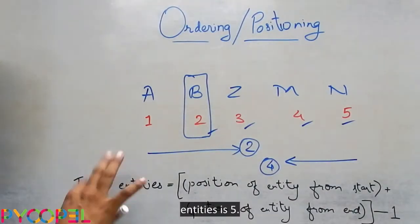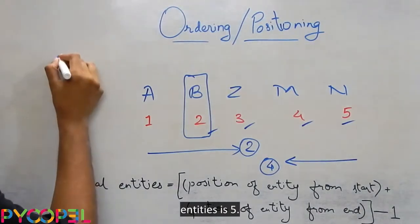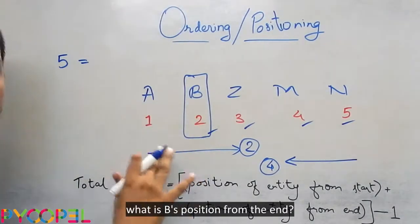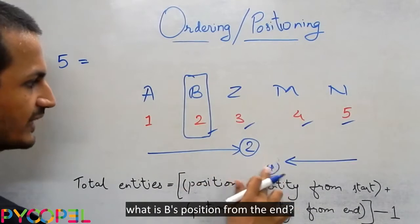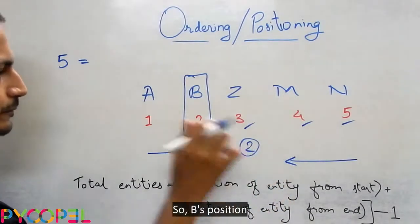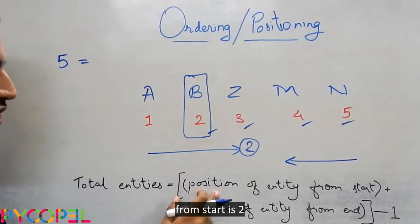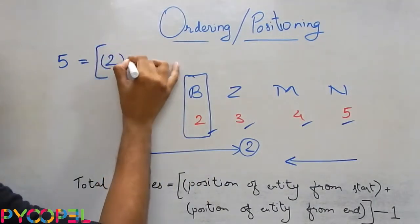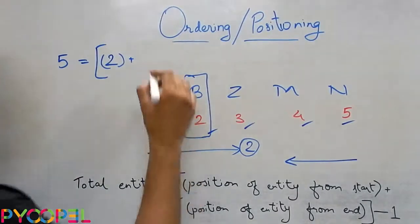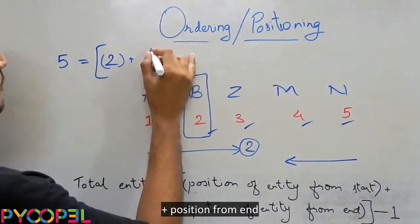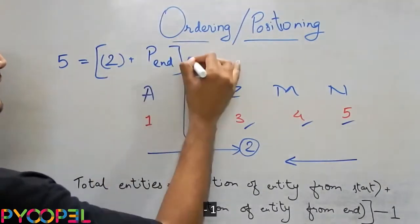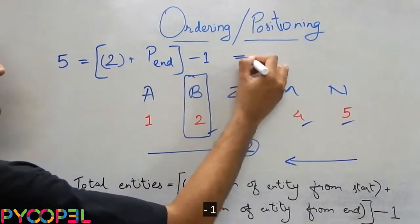We know the total number of entities are five. This is equal to... Now we want to find out, suppose we want to find out, what is B's position from the end? So B's position from start is two plus position from end. Let's say position from end minus one.